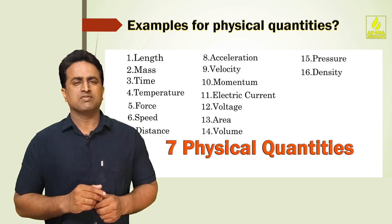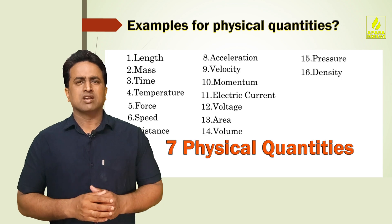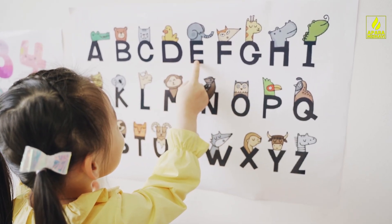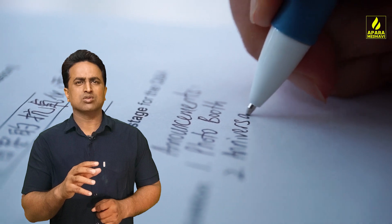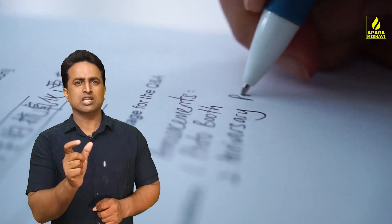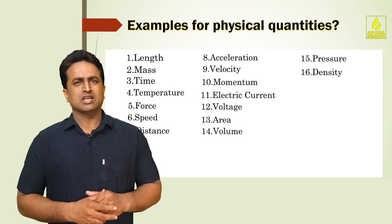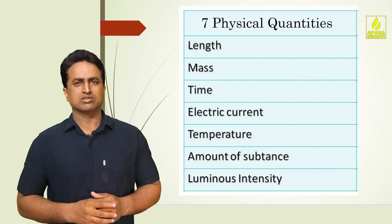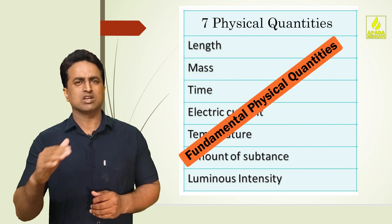There are a base of 7 physical quantities. I am going to talk about this. Just as there are 26 alphabets in English, similarly there are 7 fundamental physical quantities.